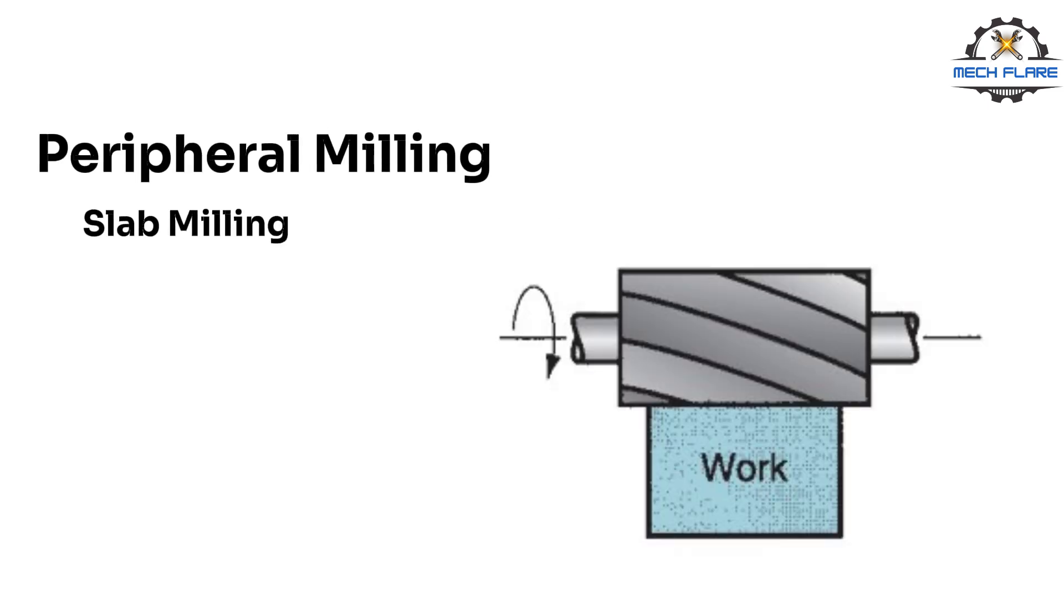Slab milling is the basic form of peripheral milling in which the cutter width extends beyond the workpiece on both sides.